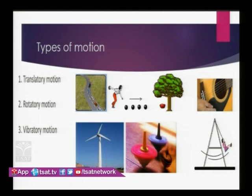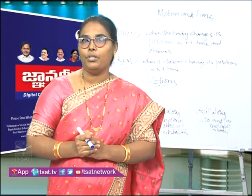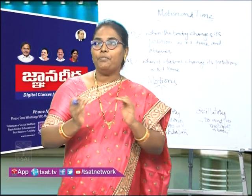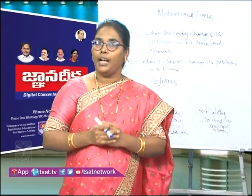Motion of a top is also an example of rotatory motion. Then coming to vibratory or oscillatory motion — the motion of the strings of musical instruments, and the swing where a girl moves forward and backward. This forward and backward, or upward and downward motion is called oscillation. The minute differences between all these motions you will come to know in your higher classes.